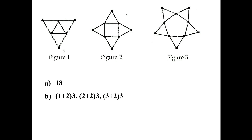For the third part, we find the algebraic expression for the nth term. Adding 2 to the position n gives the total number of triangles, and multiplying by 3 gives the total number of sticks. So the nth term is (n + 2) × 3. Simplifying: 3n + 6. That is the nth term of this sequence.